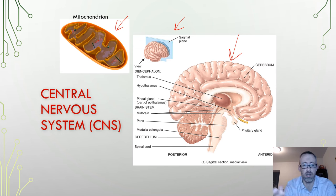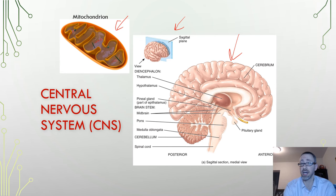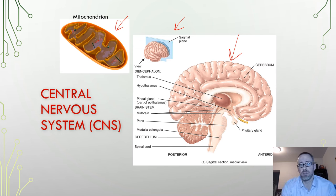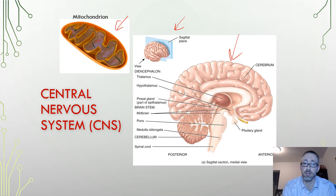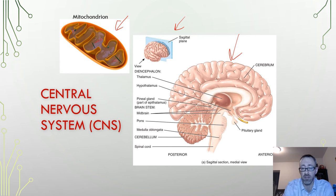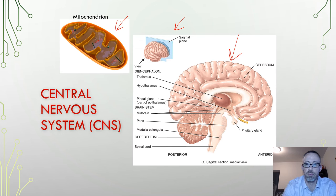The nervous system has a very organized structure, even if it may look chaotic at first. Functions associated with the cerebrum include decision making, emotion, perception of sensation, control of motor movements, vision, memory, and many other higher-order functions.